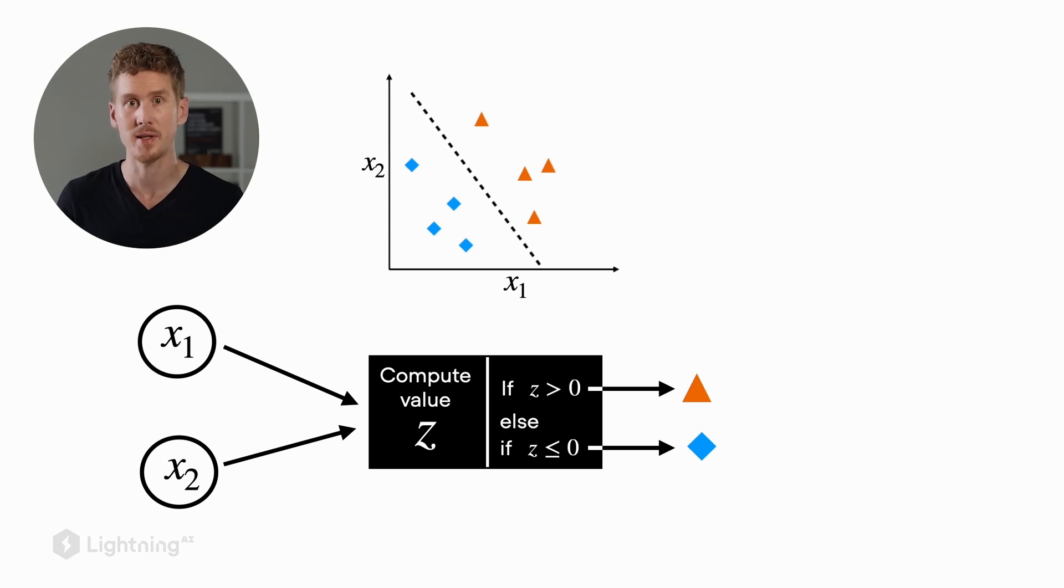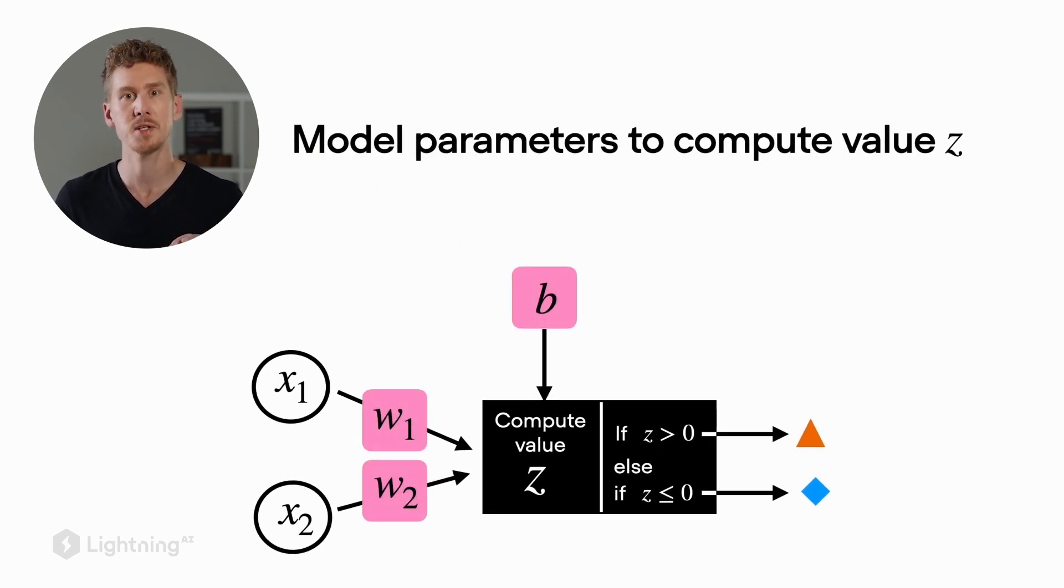How do we compute this value z though? So for that, we will involve a few parameters. We call them the model parameters, and these are essentially the things that the perceptron learns. So the model parameters here, w1, w2, and b are values that are learned from the training dataset. So the perceptron looks at the training dataset and comes up with good values for these parameters to make good predictions. That means predictions that are correct. So these values w, we also refer to them as weights, the model weights. Each input feature value has a corresponding model weight. So x1 comes with w1, and x2 comes with w2. And if we have a higher dimensional dataset, this would go on and on. So for each input node, we have an associated model weight.